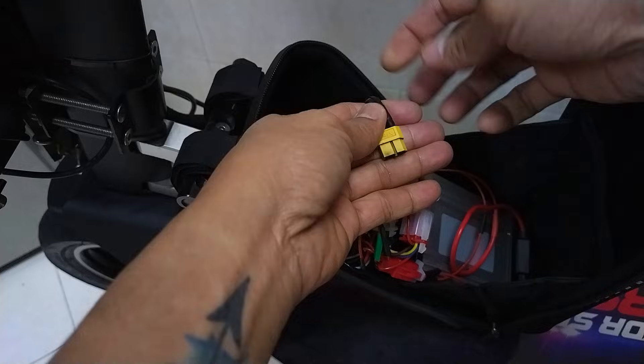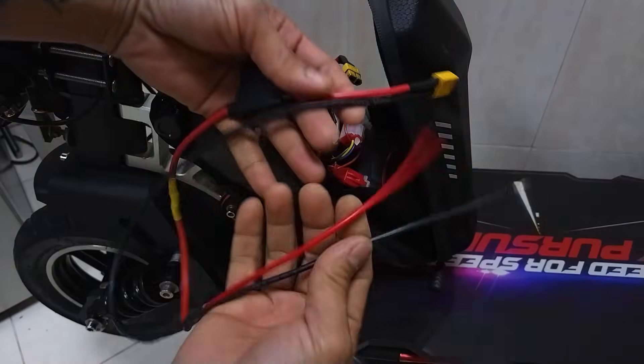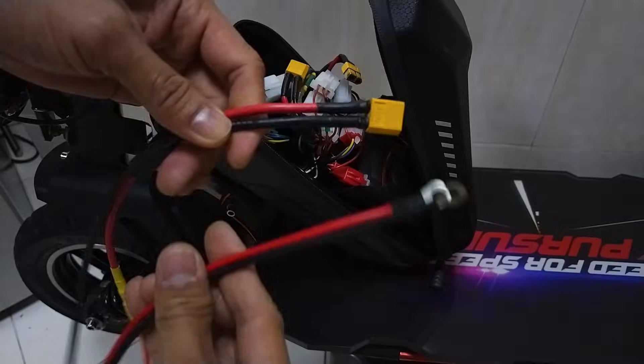This is the output port of the 48V battery inside my electric scooter. I will use extension wires with ring connectors to extend all the way out the battery output.